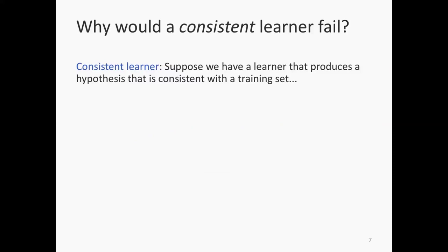Consider the following situation: suppose we have a learning algorithm that is given a data set and produces a classifier that is perfectly agreeing with every single label in the training set. We are going to call a model that agrees with a training set a consistent classifier, and we're going to call a learning algorithm a consistent learner if it always produces a consistent classifier. Have you seen a consistent learner? Which one, and why is it consistent?